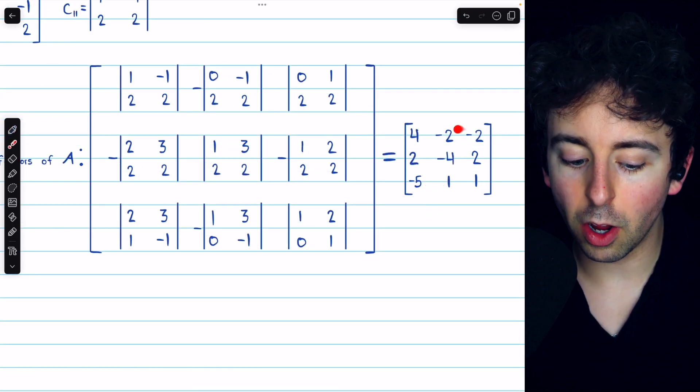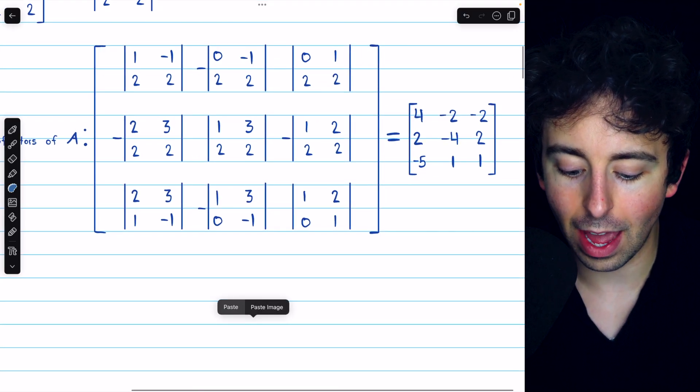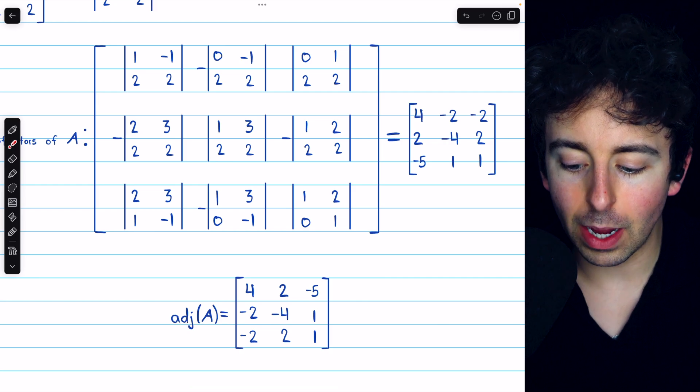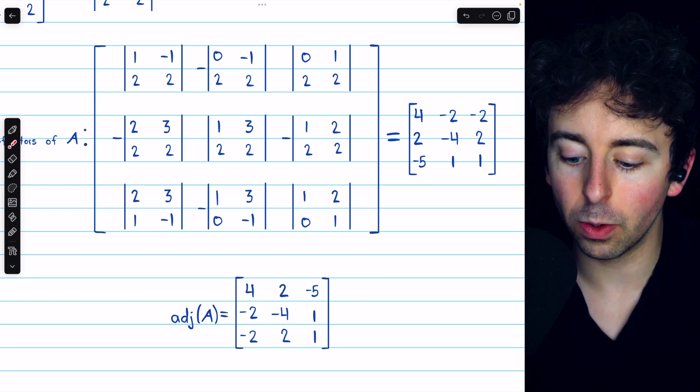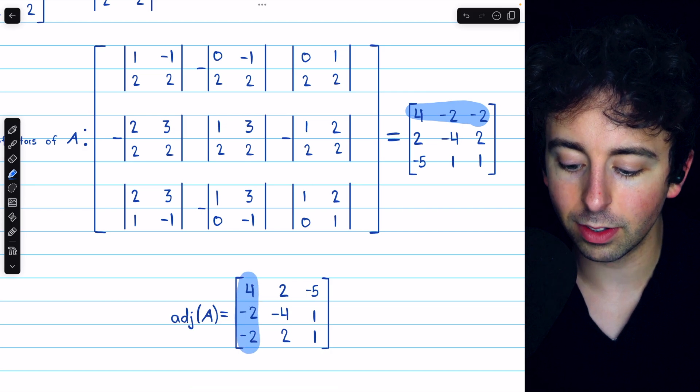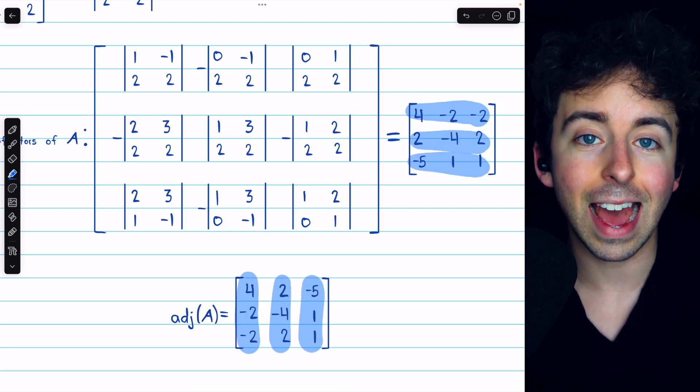That's the matrix of cofactors. All we have to do to find the adjoint then is to take the transpose of that matrix, and that gets us here. The adjoint of matrix A is the transpose of this matrix of cofactors. You can see how the rows in the matrix of cofactors become the columns in the adjoint.